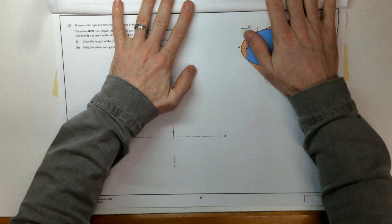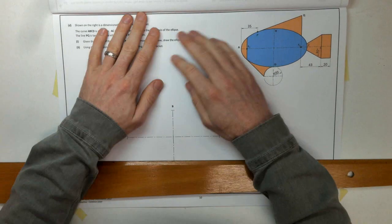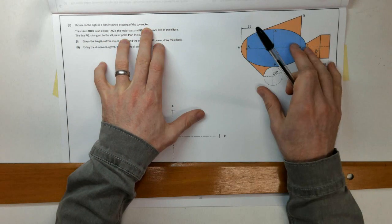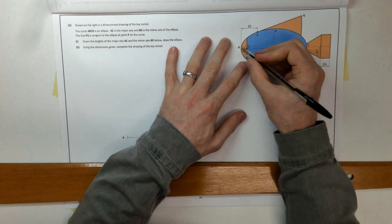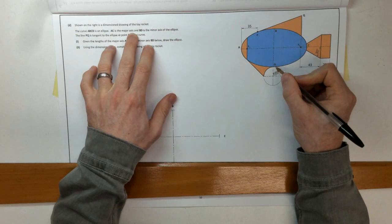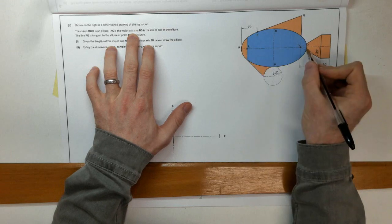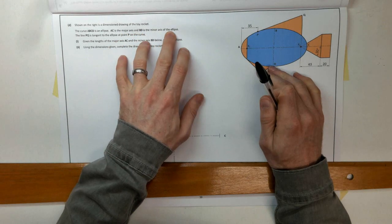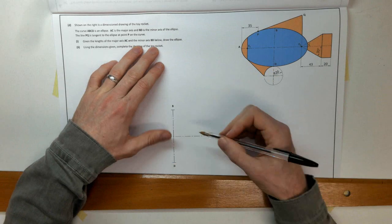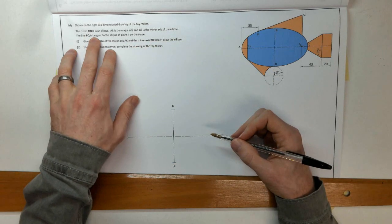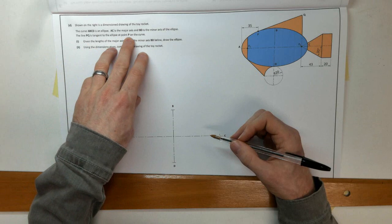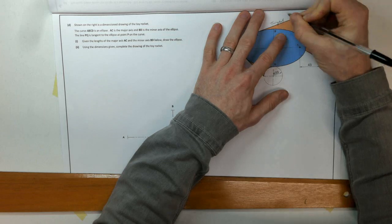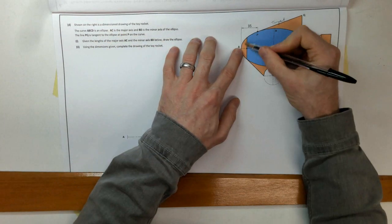On to part D. Shown on the right is a dimensioned drawing of a toy rocket. The curve A-B-C-D is an ellipse. A to C is the major axis, and they've given us the length of the major axis. B to D is the minor axis of the ellipse, and they've given that to us too. The line P-Q is tangent to the ellipse at point P on the curve — so P-Q is a tangent. Point P on the curve, which we'll find, is at 35.